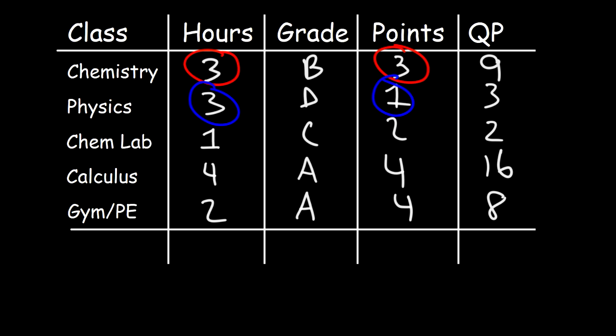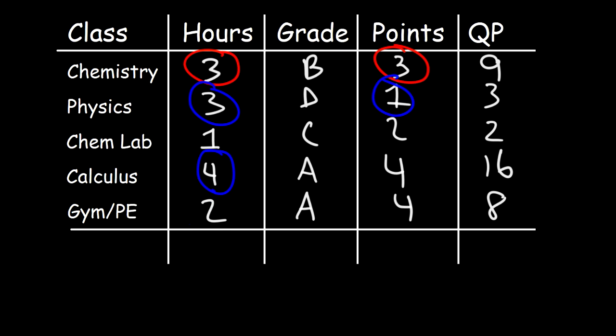Now we have to calculate the total number of credit hours and the total quality points. Let's add up the credit hours: three plus three is six, plus one is seven, plus four is eleven, plus two is thirteen. So we're taking a total of thirteen credit hours this semester.